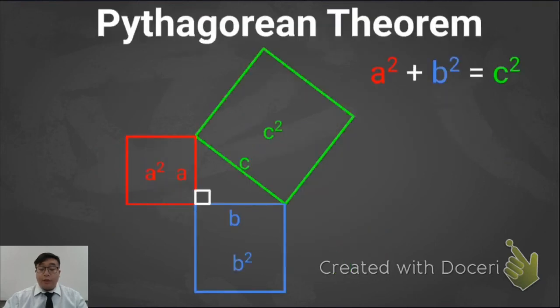In conclusion, when working on the Pythagorean Theorem: the Pythagorean Theorem is a relationship between the sides of a right triangle, where A squared plus B squared equals C squared.